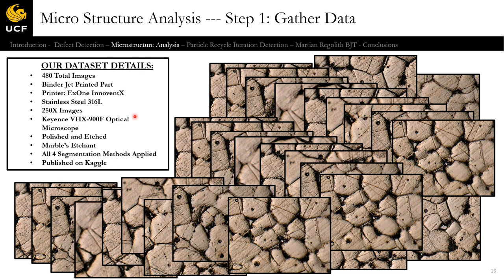Our dataset consists of 480 total images printed on a binder jet printer, the X1 Innoven X, in stainless steel 316L. Images are taken at 250X on an optical microscope; they were polished and etched using Marbles Etchant in our lab. All four segmentations were applied, and all of this data was published on Kaggle. Now we can begin implementing machine learning-based approaches.